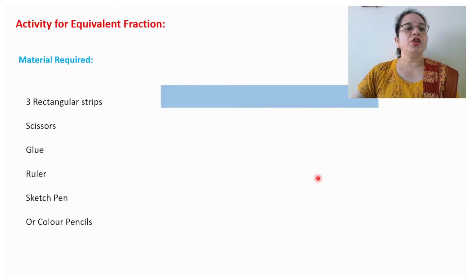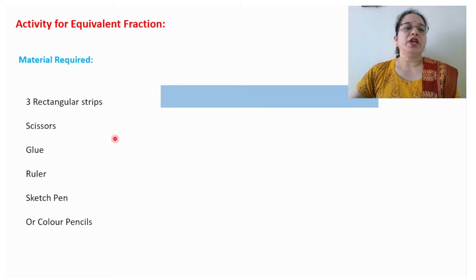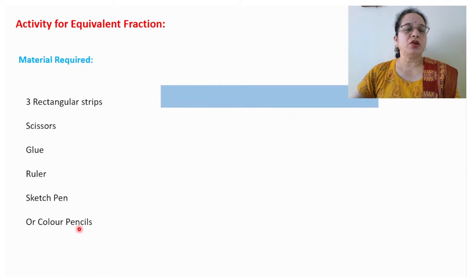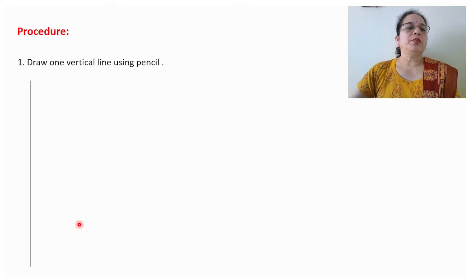My today's topic is activity for equivalent fractions. Material required: three rectangular strips — you can take them with the same color or different color, this is your choice — scissors, glue, ruler, sketch pen or color pencils.